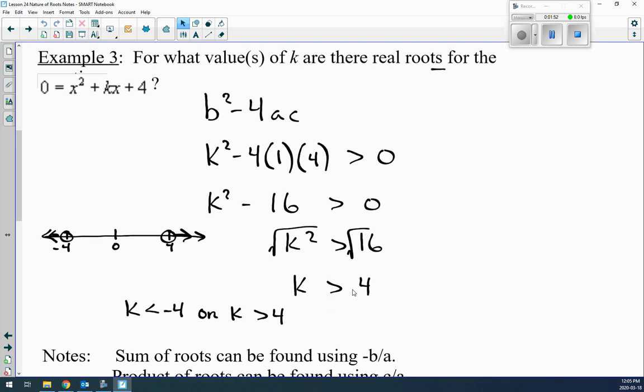Now, so it's k is greater than 4. You might have trouble deciding whether it's greater than 4 or less than 4. So try yourself a little number line. So on the number line here, we have like negative 4, 0, and positive 4.